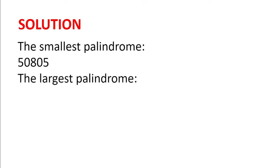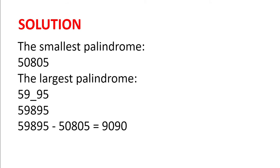To find the largest palindrome, we need to choose the largest possible thousands digit, which is 9. So we would try to find something of the form 5 9 something 9 5. And for it to be a multiple of 9, the last digit must be an 8. Because 5 plus 9 plus 8 plus 9 plus 5 is a multiple of 9. And so the difference between these palindromes is 59,895 minus 50,805, which is 9,090.